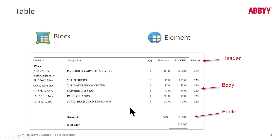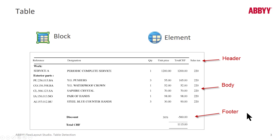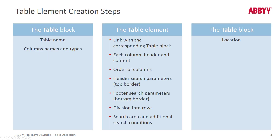The footer is optional — it's something like the word 'discount' that can tell the software you're done collecting table data, and in between is the body. Technically, the header is optional and the footer is optional, but if there is a header and a footer, it can really help you capture table data.